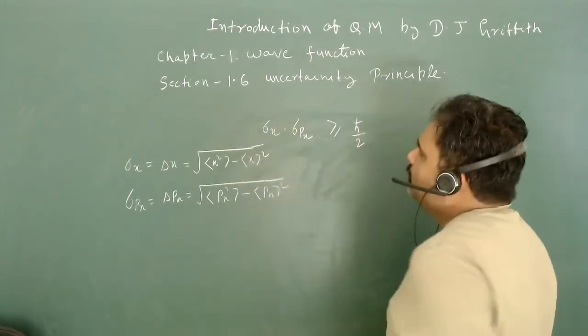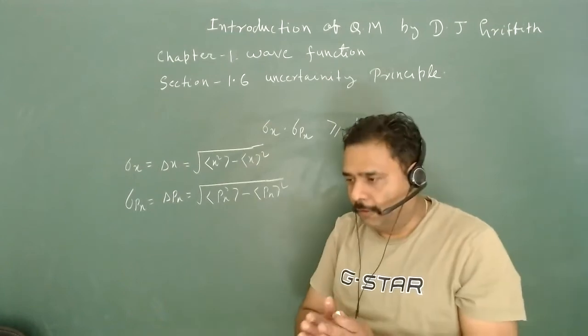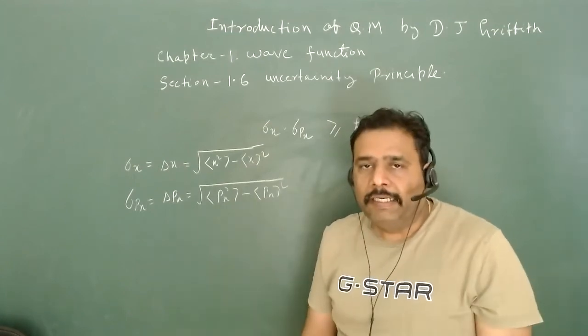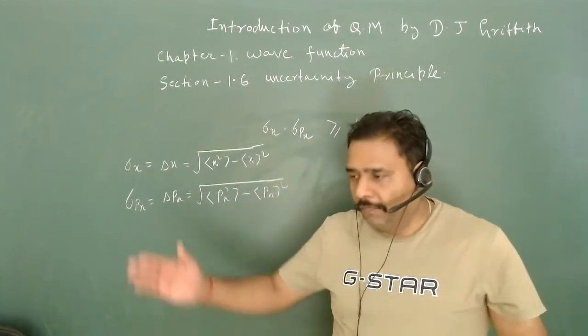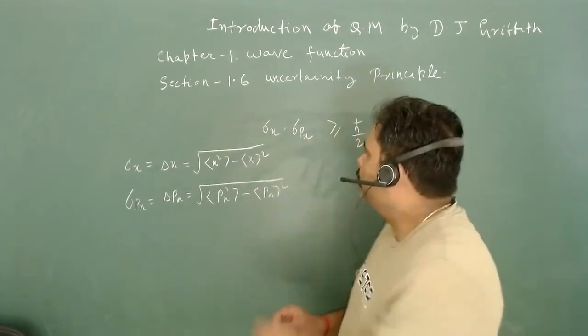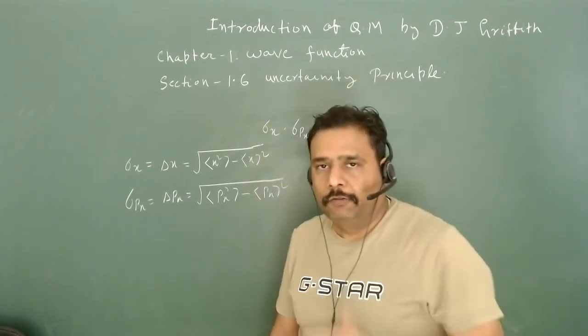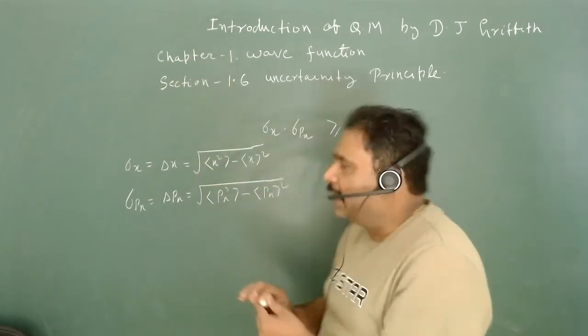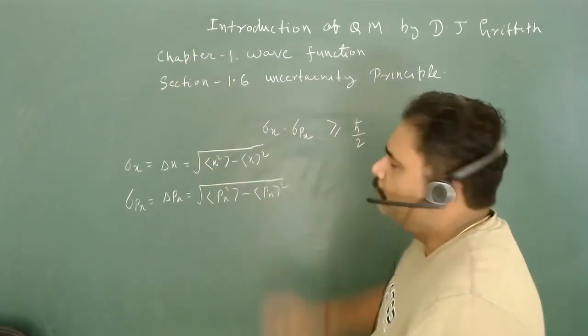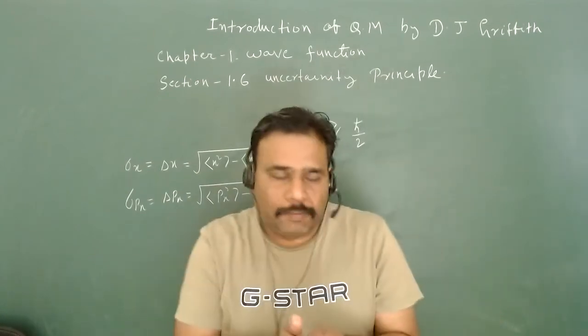What is this principle? If uncertainty in position increases, then uncertainty in momentum will decrease. If uncertainty of one conjugate variable increases, the other will compensate such that we have some constant value.